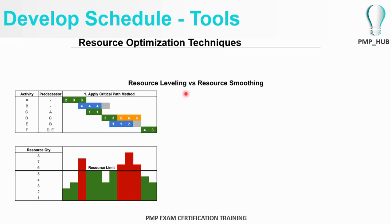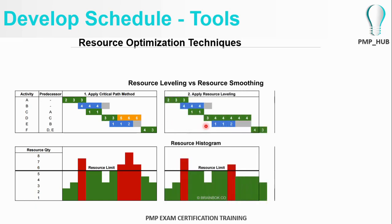Usually we first perform resource leveling and then resource smoothing. Under resource leveling for activity D, you have only four resources at any given time. The periods requiring five, six, and six resources need to be dropped to four. The total is 23 man-months. So we can schedule it as three, four, four, four, four, four, four — keeping four as the maximum. The total remains 23 man-months, equal to the original.